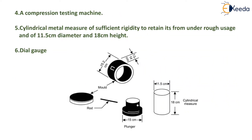The next apparatus is a compression testing machine; a cylindrical metal measure of sufficient rigidity to retain its form under rough usage, with 11.5 cm diameter and 18 cm height; and a dial gauge.